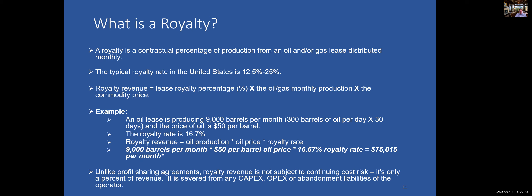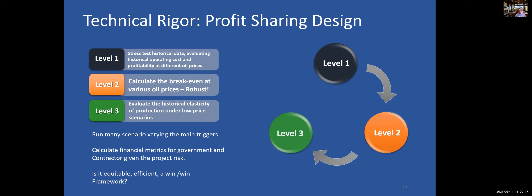Some of the technical rigor needed when designing the profit sharing framework: first, stress test the historical data, evaluating operating costs — is it profitable at different oil prices? To make it robust, calculate the break-even at various oil prices and evaluate the historical elasticity of production at low oil price. Does it look like it would put the operator out of business when the price is low in the future?